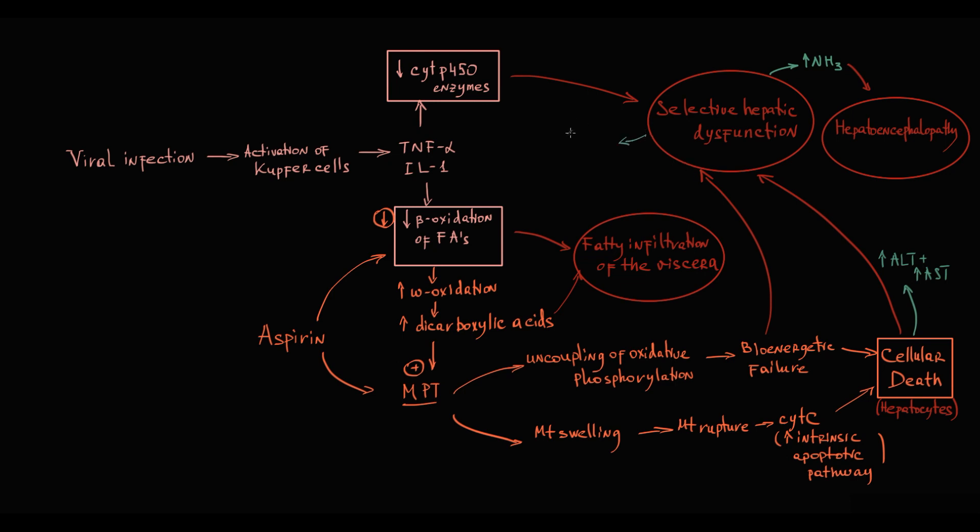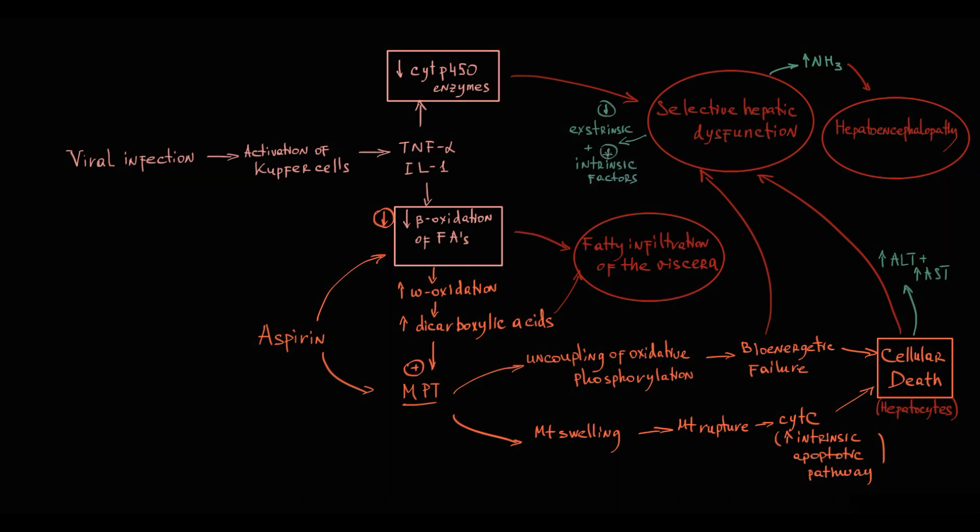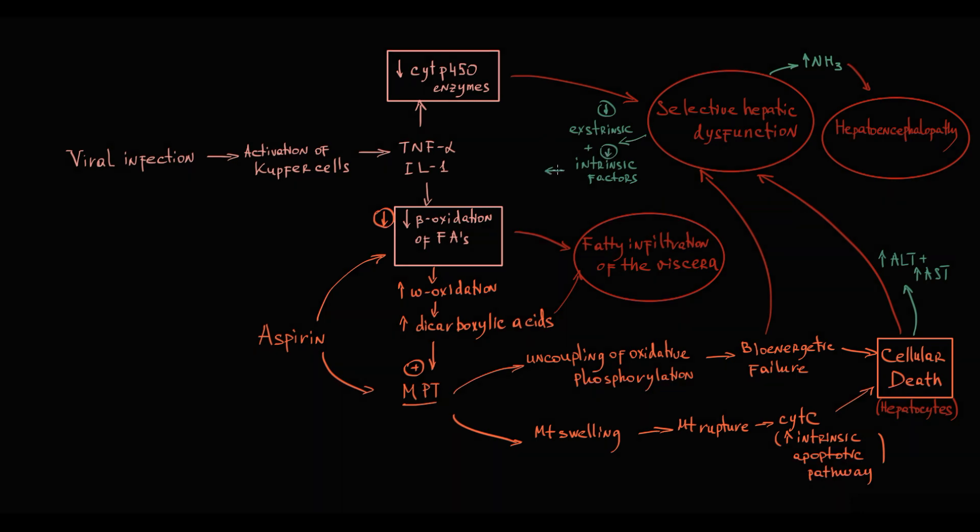Because liver produces most coagulation factors for both extrinsic and intrinsic pathways, liver damage results in decreased synthesis of coagulation factors. This causes prolongation of activated partial thromboplastin time and prothrombin time.